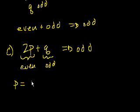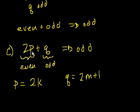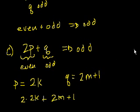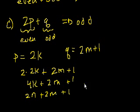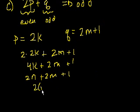And we could even prove it a little bit. If you say that p equals 2 times some number k, and we say that q equals 2 times some number m plus 1, then what does this simplify to? This simplifies to 2 times p, which is 2 times some number k, plus q, which is 2 times some number m plus 1. So this becomes 4 times some number k plus 2 times some number m plus 1. Well, 4 times some number k, that's the same thing as 2 times some other number n.